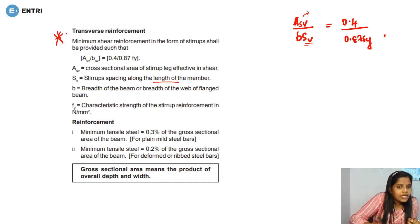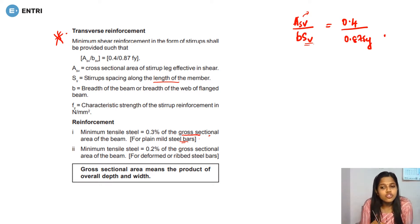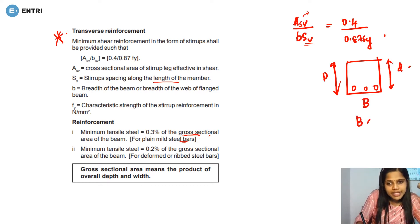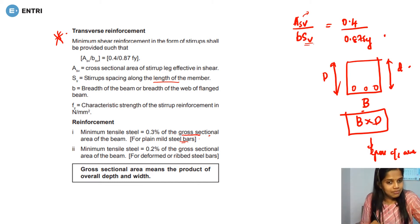This is transverse reinforcement. Minimum tensile reinforcement is 0.3% of the gross sectional area for plain mild steel bars. For deformed or ribbed steel bars, it is 0.2% of the gross sectional area. The gross sectional area is the overall depth multiplied by the breadth B. The effective depth is measured from the center of tensile reinforcement.